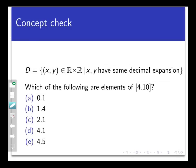In a previous video, we introduced the relation on the set of real numbers by saying x and y are equivalent if and only if they have the same decimal expansion. We argued that this is actually an equivalence relation. So which of the following numbers is in the equivalence class of [4.10]? Select all the ones that apply and come back when you're ready.